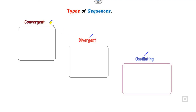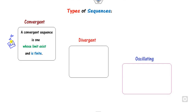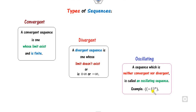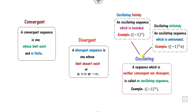A sequence is said to be convergent when you find the n-th term a_n and compute the limit — if it exists and is finite, then we say it is convergent. On the other hand, a sequence is divergent when the limit does not exist, or if it is either plus infinity or minus infinity. An oscillating sequence is one which is neither convergent nor divergent. For example, the sequence minus 1, plus 1, minus 1, plus 1 can never converge to a single point.